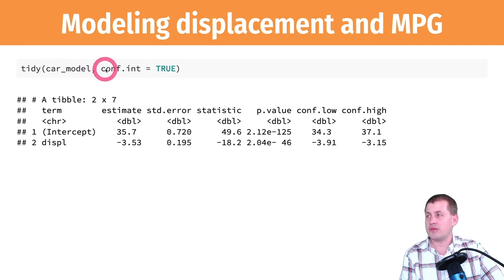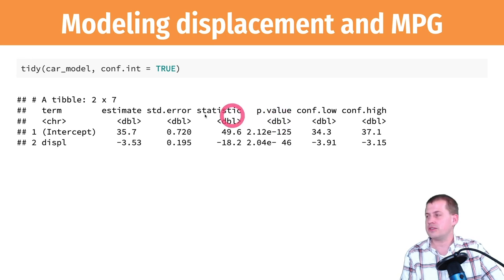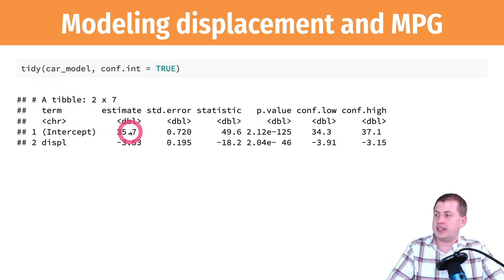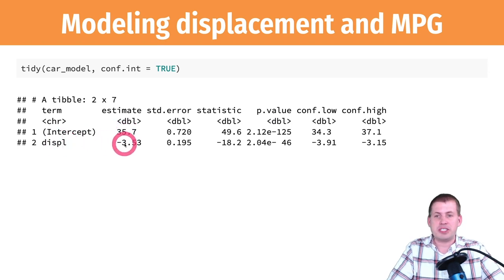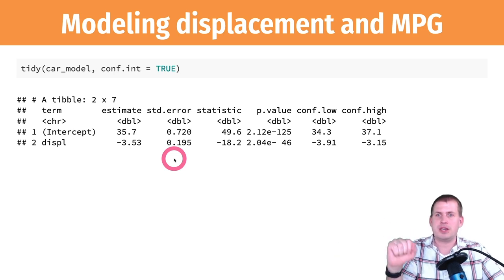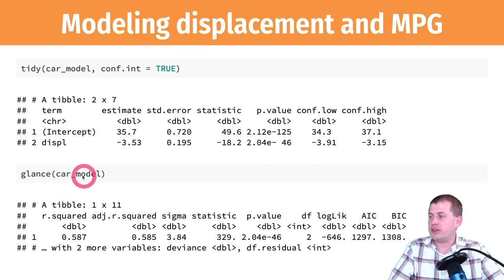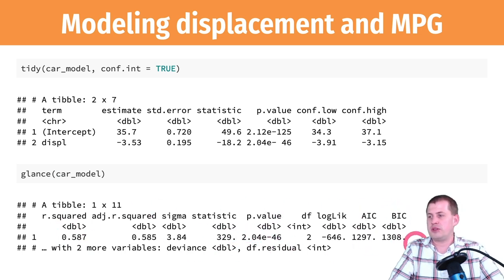If we want to see the results, we use tidy(). We take that car_model and tidy it. There's an argument for confidence intervals — by default it's false, but we can set conf.int = TRUE and get columns showing confidence intervals. We can see the results: an intercept of about 35 (that's our β0) and a displacement coefficient of −3.5 (that's β1). If we use glance(), it shows model diagnostics like R-squared, F-statistic, p-value, AIC, and BIC.